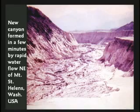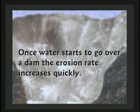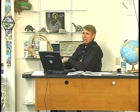Once water starts going over a dam, erosion can take place very, very quickly. Here's a Grand Canyon in Yellowstone National Park, Wyoming — another Little Grand Canyon — that probably formed in a couple of hours as the flood went off. It didn't form slowly over millions of years. In the sides of these canyons, you can see layers of rock.